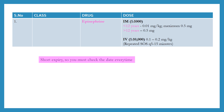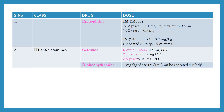Remember that epinephrine has a very short expiry, so always check the date before using. The next class of drugs is H1 antihistamines, which include cetirizine and diphenhydramine. Cetirizine is given orally once daily: 2.5 mg for 6 months to 2 years, 2.5 to 5 mg for 2 to 5 years, and 5 to 10 mg for more than 5 years. Diphenhydramine is 1 mg per kg per dose intramuscularly or intravenously, repeated every 4 to 6 hours.